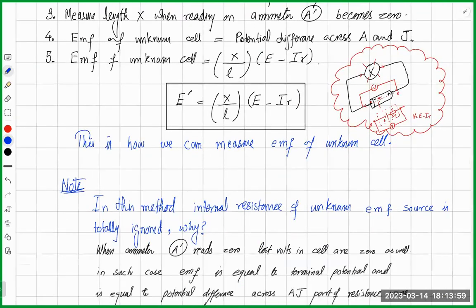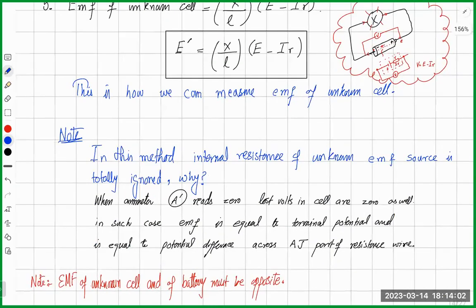An important advantage: we don't need to worry about the internal resistance of the unknown cell. Because ammeter A-dash is showing no current, practically no current is flowing through E-dash. If there is no current, there is no I×r drop, so terminal potential and EMF are equal. There are no lost volts, so EMF and terminal potential are the same.